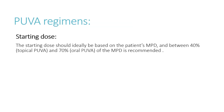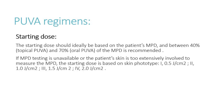Starting doses should ideally be based on the patient's minimal phototoxic dose; between 40% and 70% of the MPD is recommended. If MPD testing is unavailable, or the patient's skin is too extensively involved to measure MPD, the starting dose is based on skin phototype: phototype 1 — 0.5 J/cm²; type 2 — 1 J/cm²; phototype 3 — 1.5 J/cm²; type 4 — 2 J/cm².